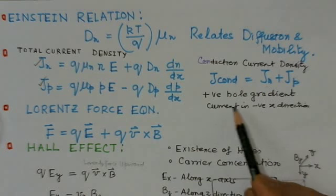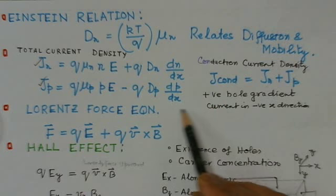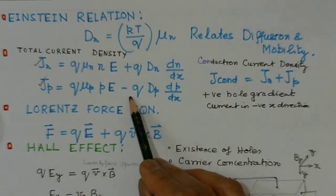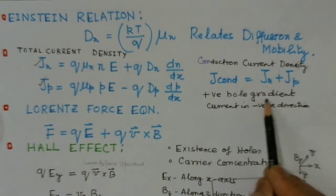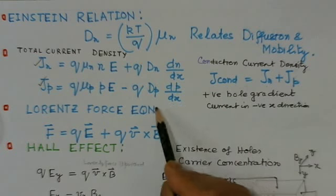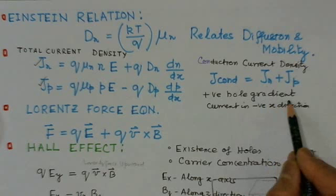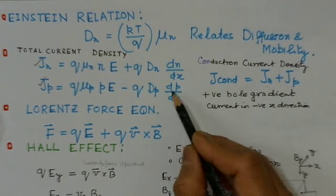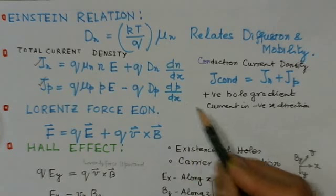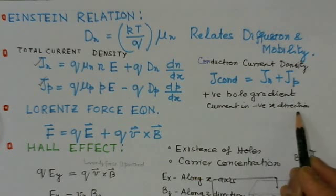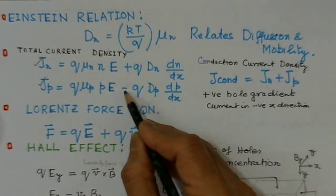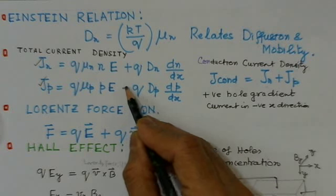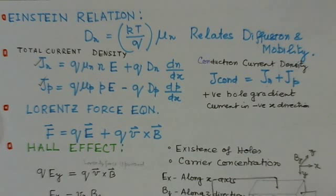Note the negative sign in the hole diffusion term: if dp/dx is positive, the hole gradient gives current in the negative direction, which is why the diffusion factor is negative.